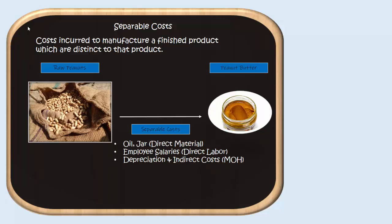What about peanut butter? The raw peanuts are the joint costs of production — they go into all of our different peanut lines. But the costs specific to turning those raw peanuts into peanut butter include things like the oil used to make it smooth and creamy, and the jar we put it in as direct materials. Just like with salted peanuts, we have employee salaries to run the canning machines, plus depreciation on those machines and other indirect costs.